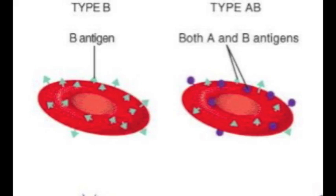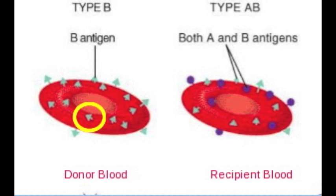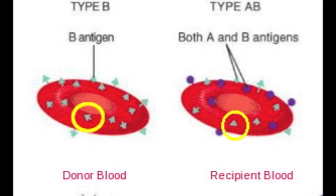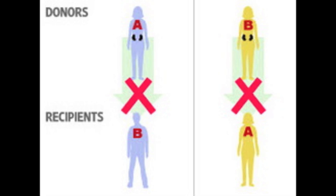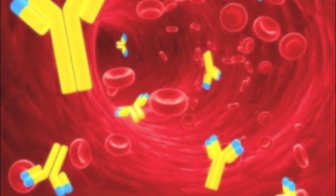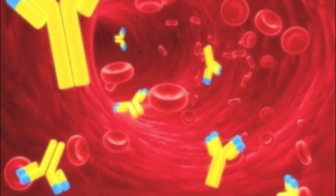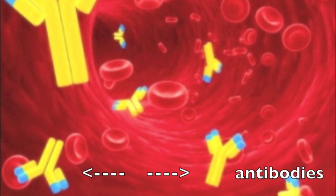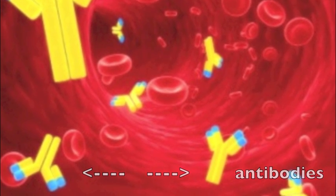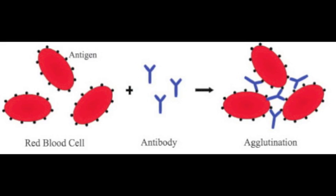In order for this process to work, the agglutinogens on the surface of the donor's blood corresponding to their blood type must match the anti-agglutinogens on the surface of the recipient's blood. If foreign blood of a different blood type is introduced to a human, the patient's antibodies may react with the antigens on the surface of the donor's blood, leading to agglutination of the blood and possible death.